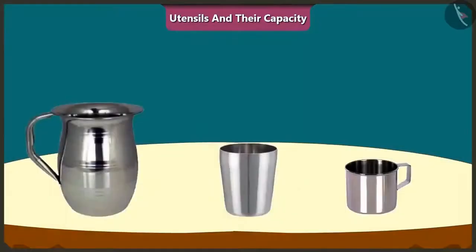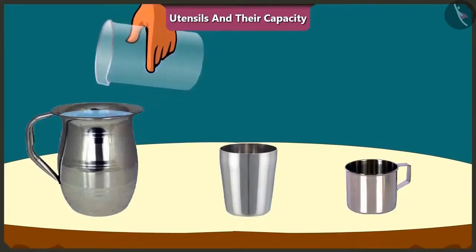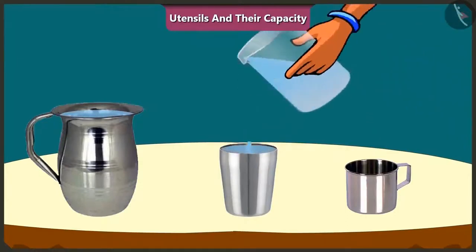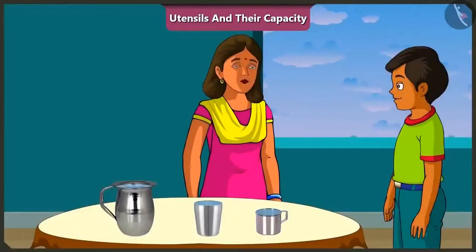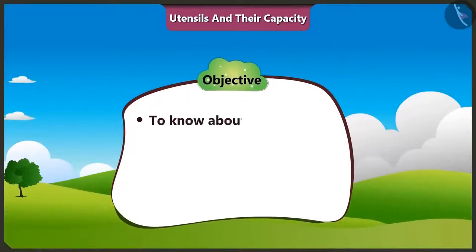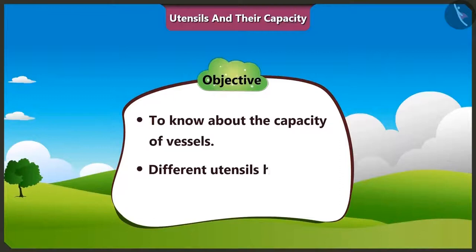How is that? Come on, let me explain it to you. See, I will pour water in this jug, in this glass and in this mug. The amount of water that can fill each of these vessels respectively is called its capacity. So, is this the way to know the capacity of any vessel? Yes, Mishtu. So, come on, let us know more about the capacity of vessels and we will understand how different vessels have different capacities.